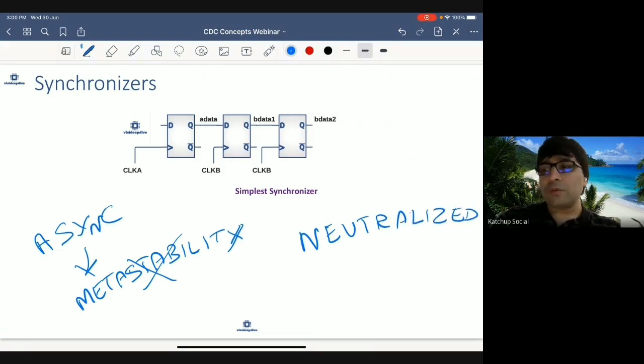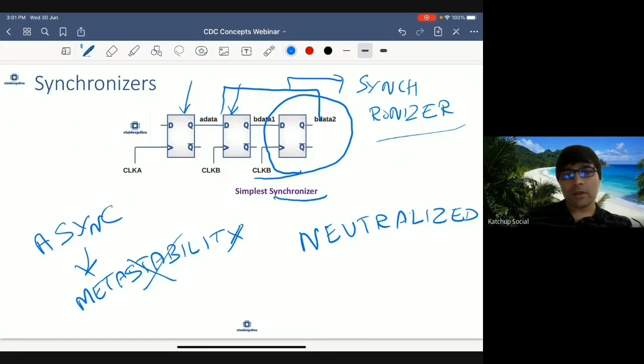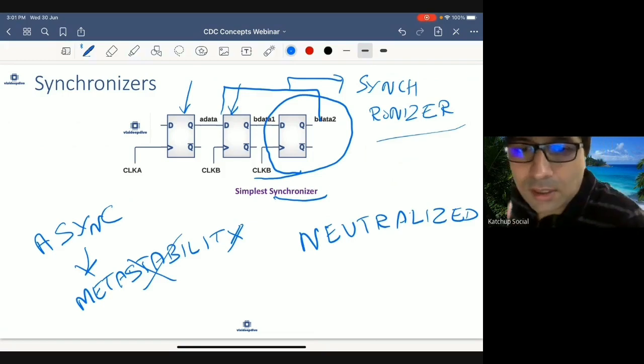This is by using a synchronizer. So this is the simplest synchronizer which is possible. And what is happening in this synchronizer? This is the transmit flop. This is your receive flop. And after the receive flop, you have added one more flop. And these two flops, when combined together, are known as - this pair of flops is known as synchronizer. So this is how you create the simplest synchronizer.